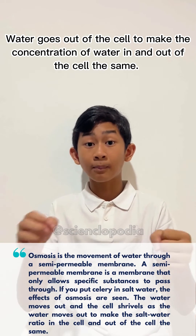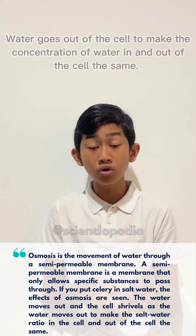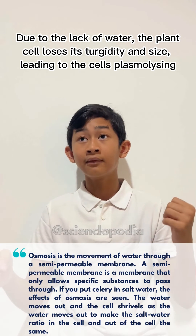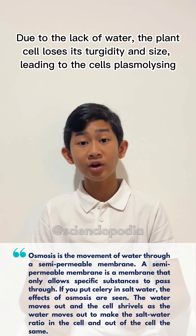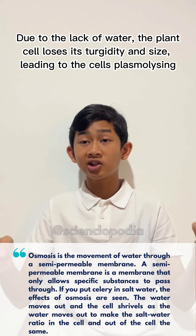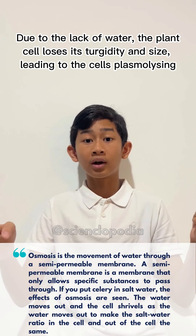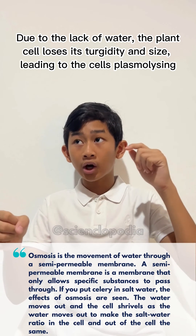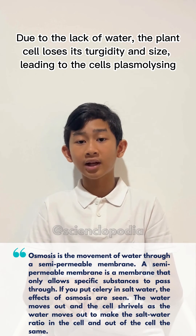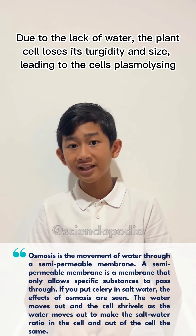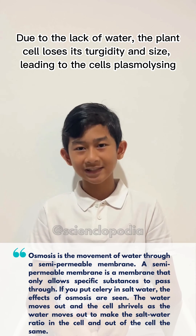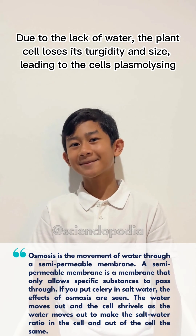The plant cell is going to lose its water molecules and therefore it's going to shrink and lose its turgidity, or its hardness. And that's how plant cells become plasmolyzed or less turgid.